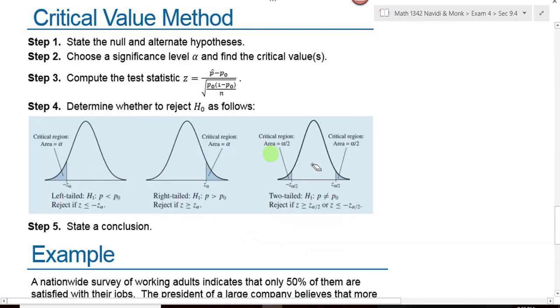Once again, left tail, right tail, two tail, critical regions. The tail is determined by the alternative hypothesis.